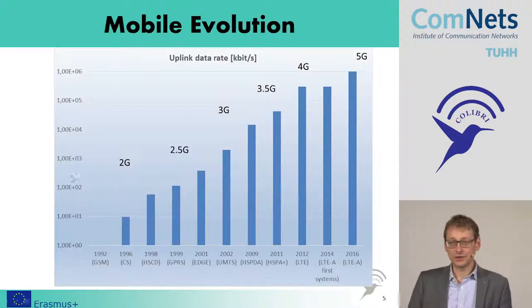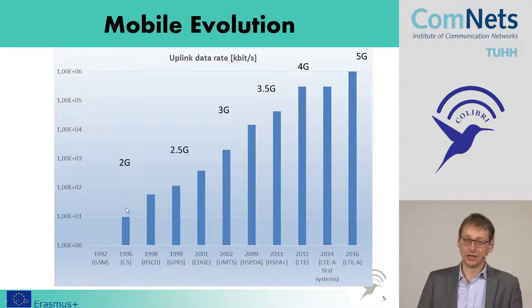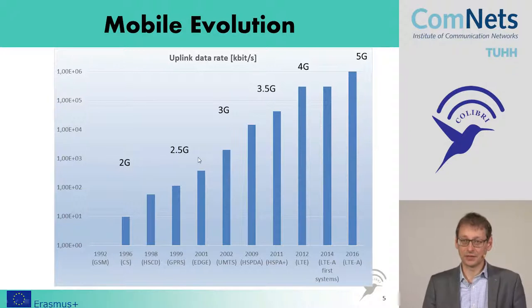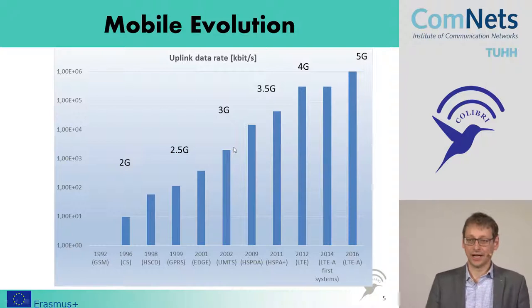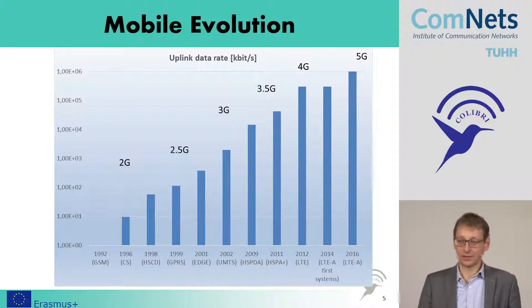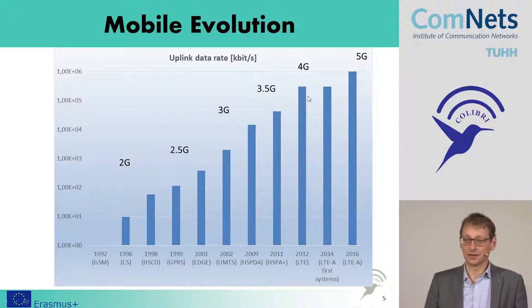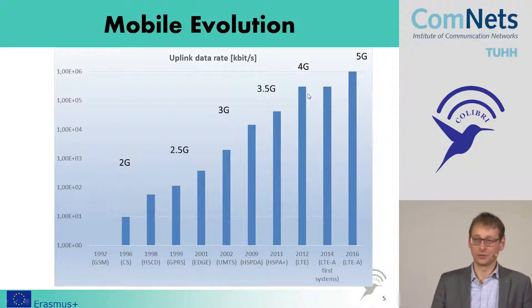Looking at the data evolution, the second generation had something like 10 kilobits. Over the years there has been a constant evolution in data rate. UMTS aimed at around 2 megabits, then improvements like High-Speed Downlink Packet Access (HSDPA) and uplink packet access pushed this to something like 14 megabits. Then LTE ranges up to 100 megabits, and 5G should reach 1 gigabit per second.